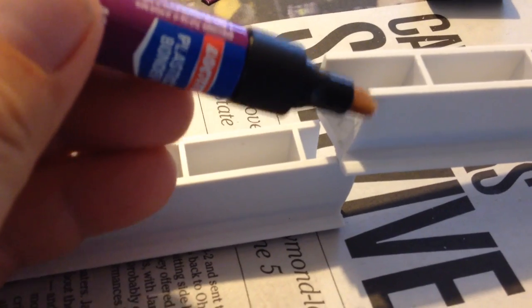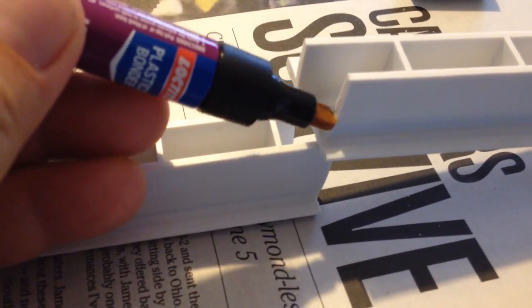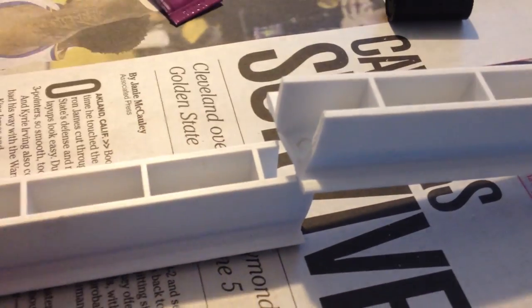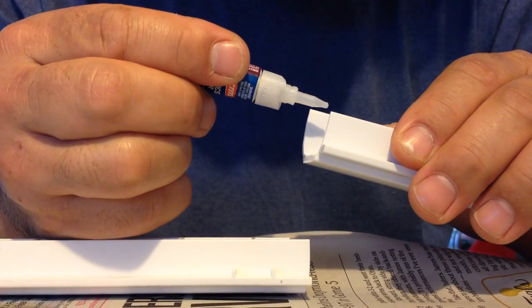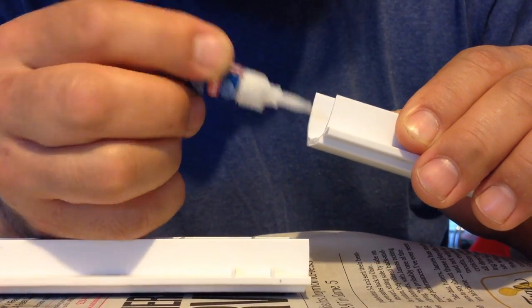So this is a two-part glue. There's an activator with a felt tip applicator. You rub this on both sides of the thing you want to bond and then you put the glue just on one side.